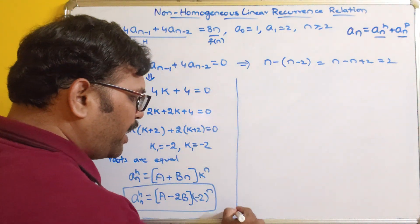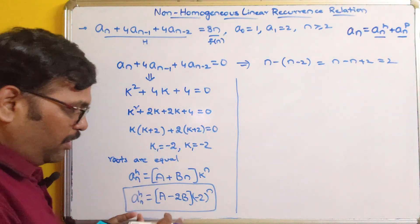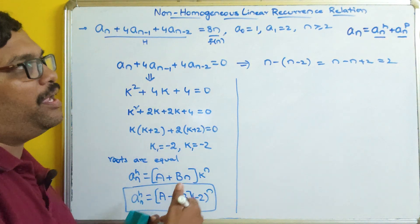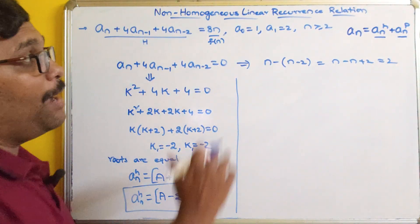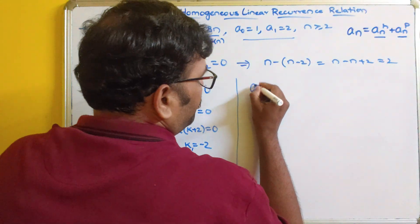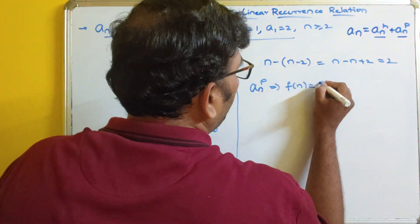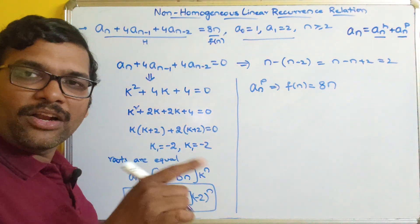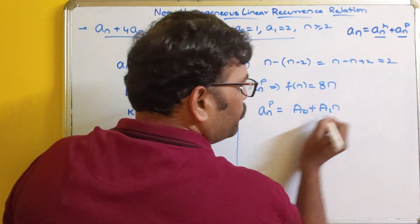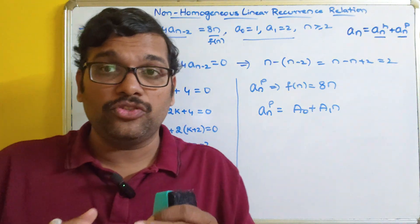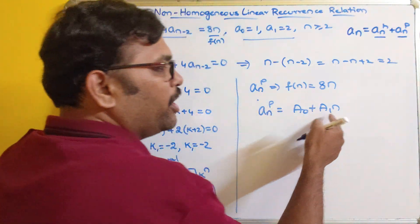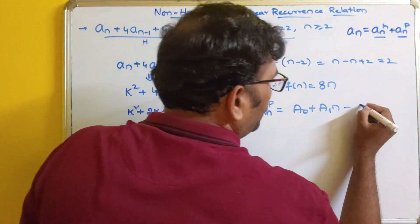Now we have to find the general solution for a_np. We should not apply initial values yet because this is only part of the solution. The function here is 8n. If the function is in terms of n (constant times n), then a_np takes the form a₀ + a₁·n. From the table of general solutions for different functions, a_np = a₀ + a₁n. Let this be equation 1, and the original recurrence relation be equation 2. We substitute equation 1 into equation 2.